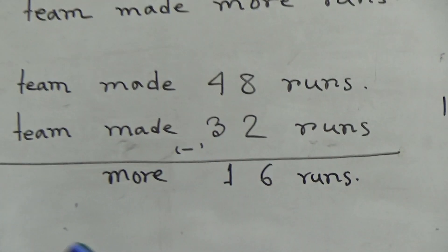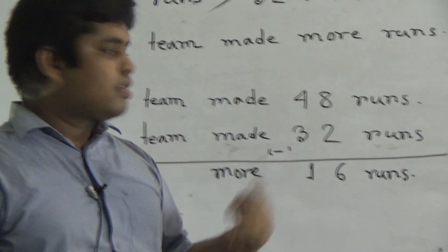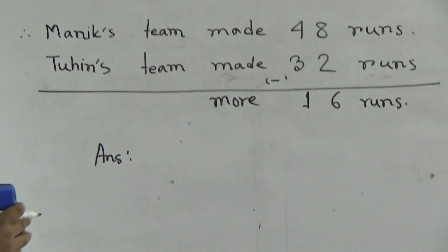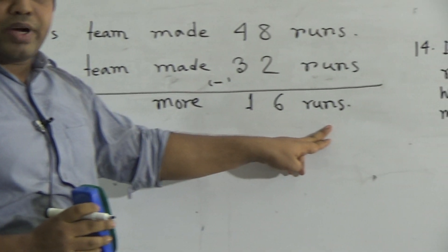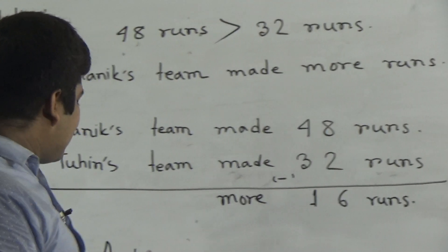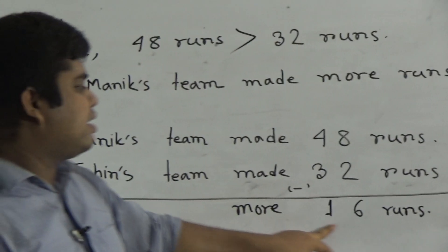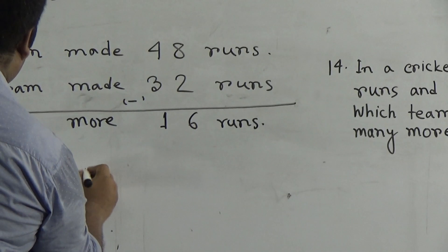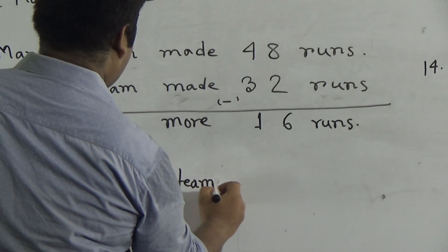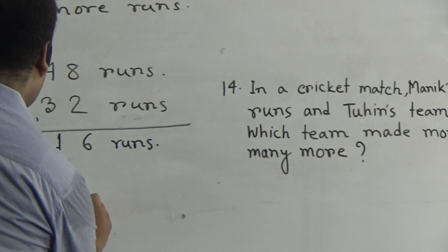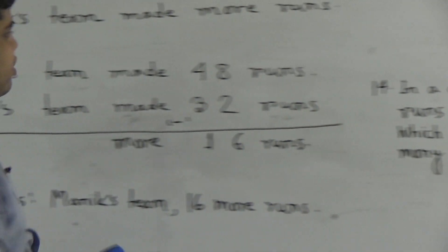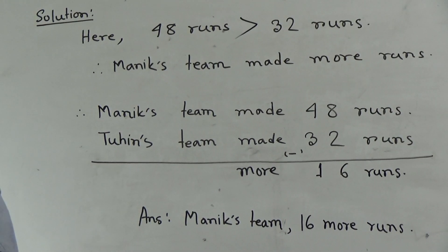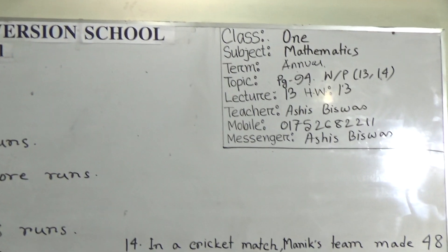That means Manik's team made 16 more runs than Tuhin's team. Now write the answer. My students, some of you write only 16 runs. But notice this question has two parts, so the answer has two parts: one is Manik's team, and another is 16 runs. First answer: Manik's team. Second answer: 16 more runs. I hope you have understood. This is your SW also — SW 13, question number 13 and 14 in your assigned SW copy.